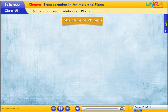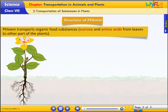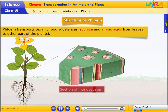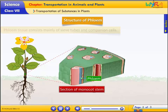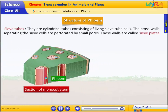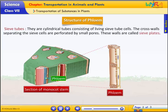Let's understand the structure of phloem. Phloem transports organic food substances — sucrose and amino acids — from leaves to other parts of the plant. Phloem tissue consists mainly of sieve tubes and companion cells. They are cylindrical tubes consisting of living sieve tube cells. The cross walls separating the sieve cells are perforated by small pores, and these walls are called sieve plates.